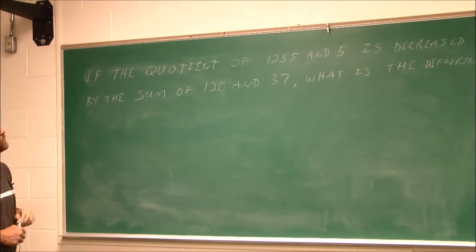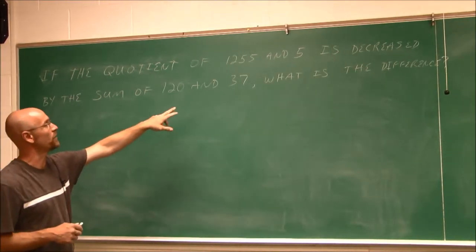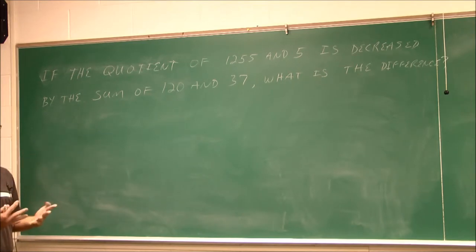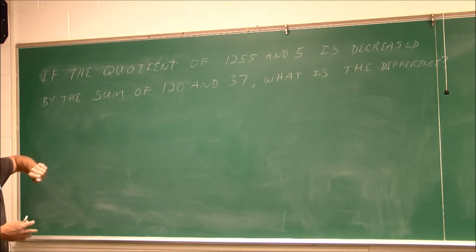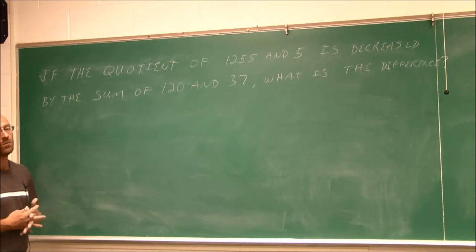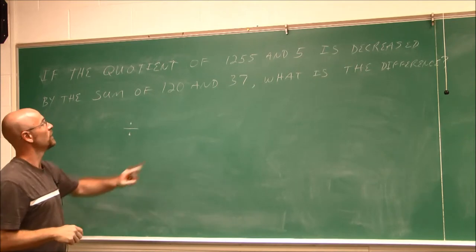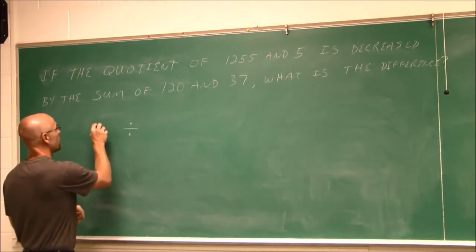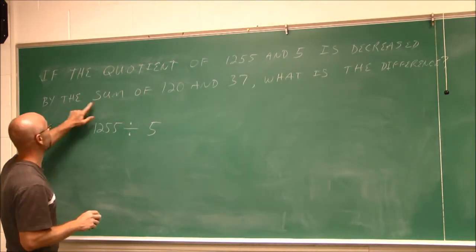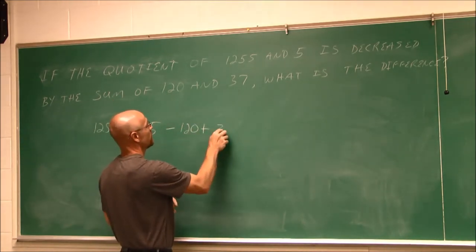Let's move on to the next example. We're told, if the quotient of 1,255 and 5 is decreased by the sum of 120 and 37, what is the difference? Now, if we look at this, we read it the first time. I'm assessing, do I understand the words? I'm comfortable with the word quotient and sum and decreased by or difference. I'm familiar with those words. So now I'm going to say, I'm going to read it a second time and say, what's the given information? Well, it asked me to find the quotient. So that's division. That's given. Of 1,255 and 5, and then this is decreased by the sum. Sum tells me addition. Decrease tells me subtraction of 120 and 37.